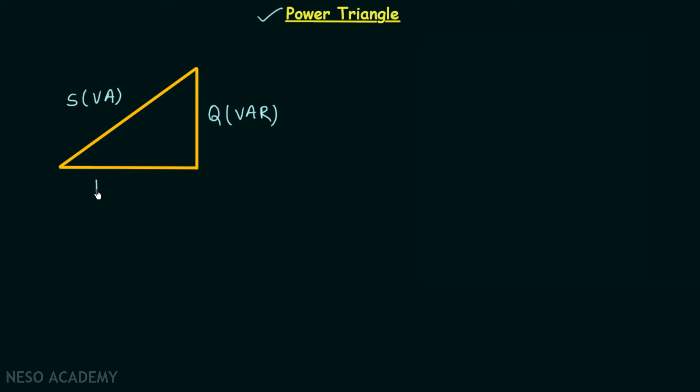The third one is the real power and it is representing the base of the triangle and we know it is measured in watts. And the fourth item which is the final item is this angle which is the power factor angle theta.